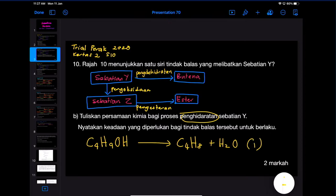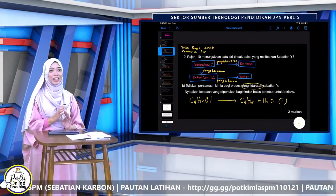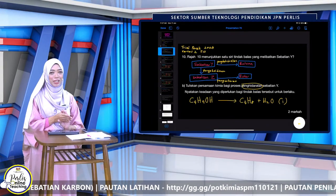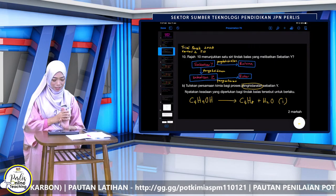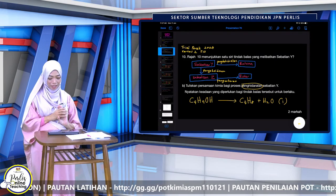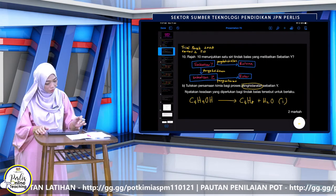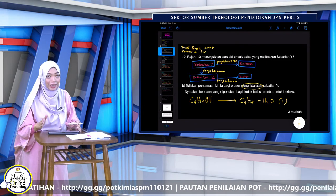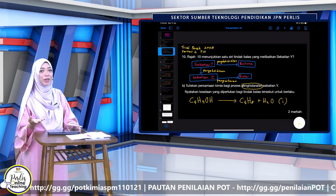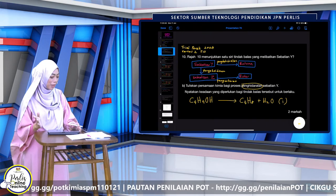Nyatakan keadaan yang diperlukan bagi tindak balas tersebut untuk berlaku. Maksudnya, keadaan ni adakah dia ada suhu tertentu, mangkin ke? Keadaan untuk tindak balas penyahhidratan — cek balik. Kena tulislah mangkin dia apa. Jadi Cikgu tinggalkan supaya awak buat rujukan: cari apa mangkin alkohol bertukar kepada alkena.